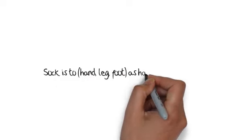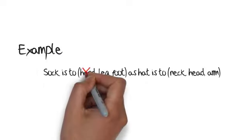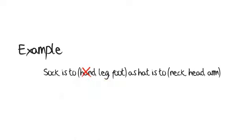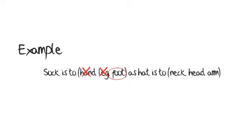Example: sock is to hand, leg, foot as hat is to neck, head, arm. First try to find a relationship between the first word sock and the first group of words: hand, leg, foot. Sock and hand — no. Sock and leg — no. Sock and foot — yes.